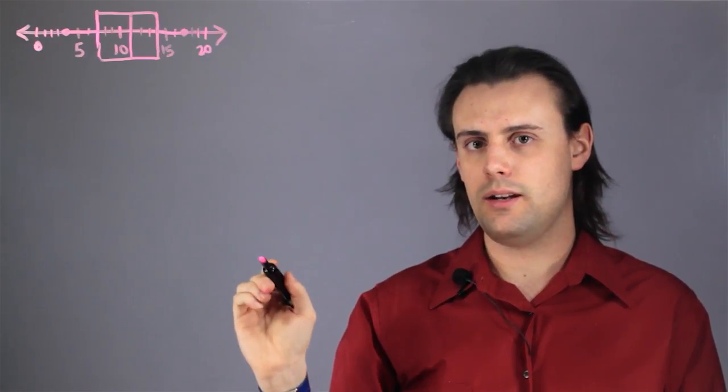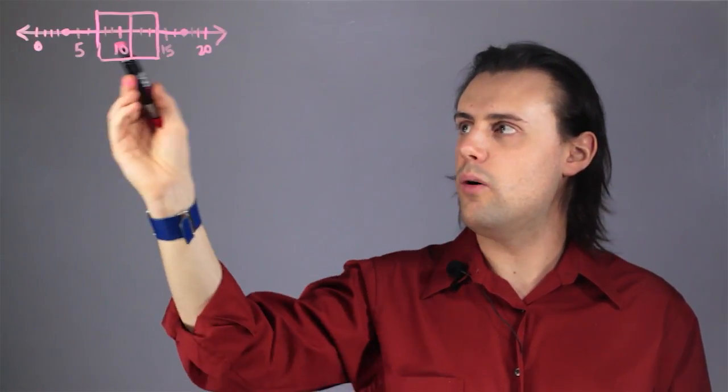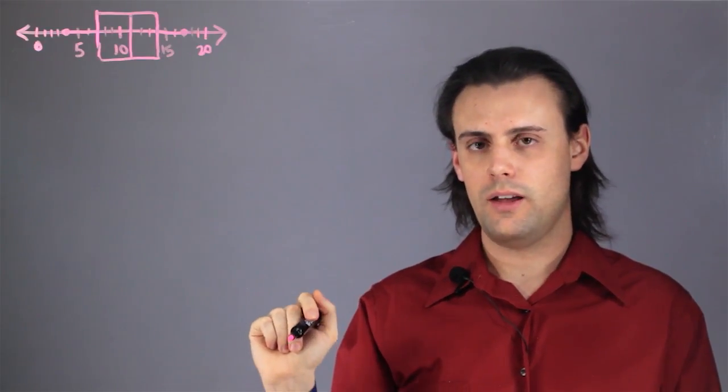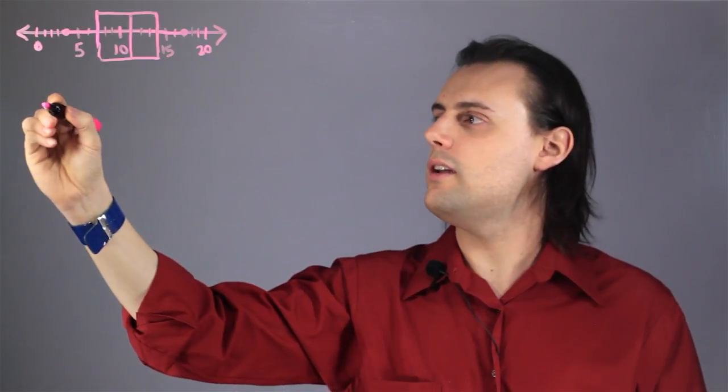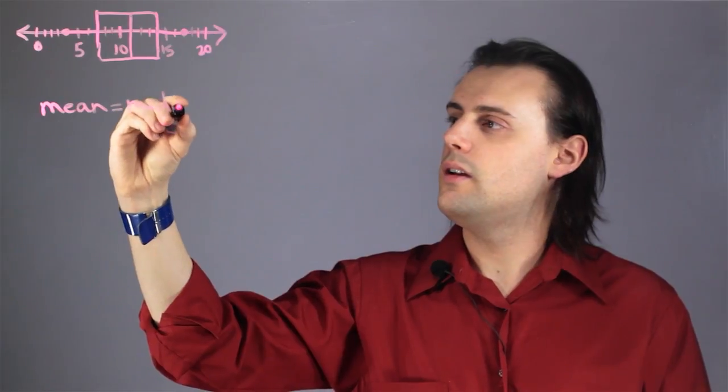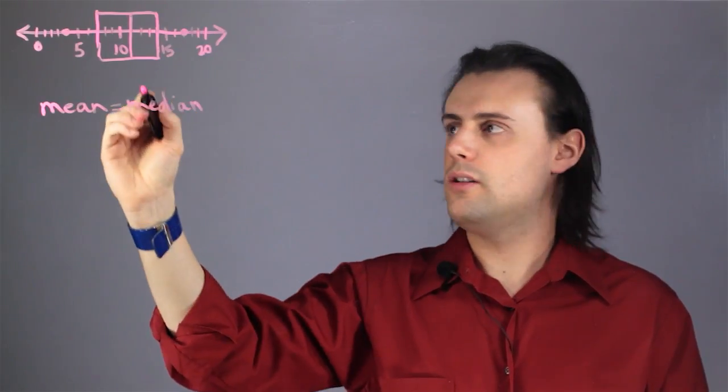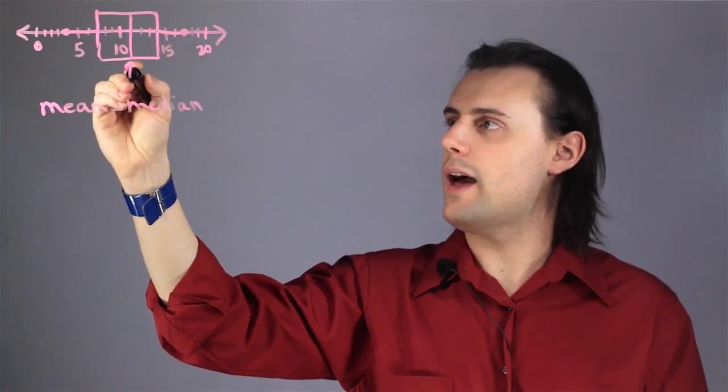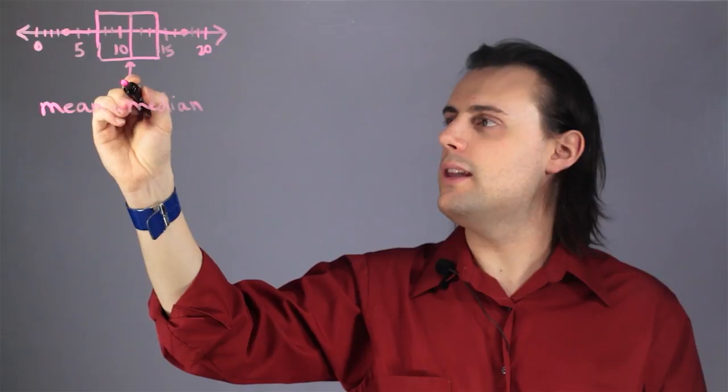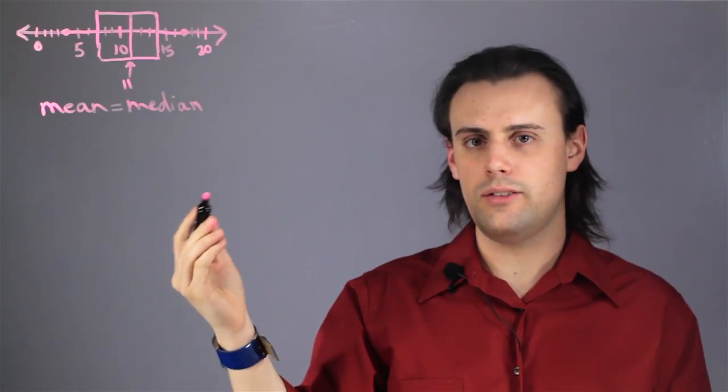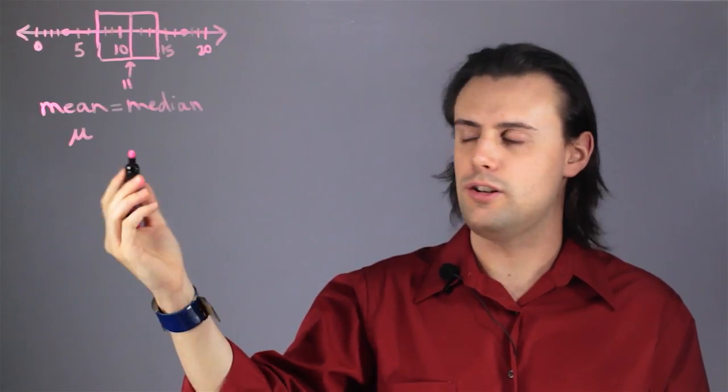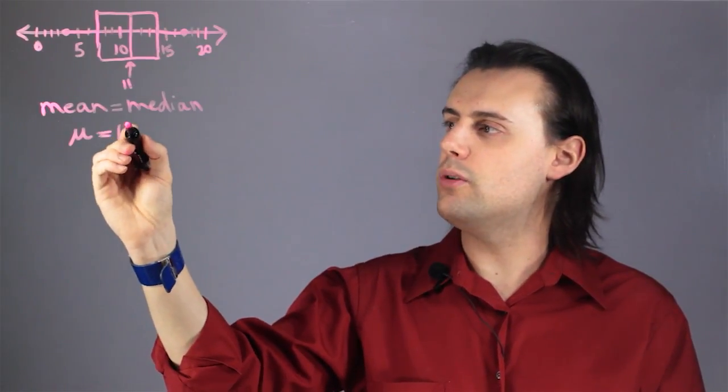I can only determine the mean if I know that all the numbers in my data set follow a normal or Gaussian distribution. If that's the case then the mean is simply equal to the median which in this case would correspond to the number overlapped by this line in the middle of my box which happens to be 11. So if that's the case then my mean which I'm going to use Greek letter mu to denote the average or mean would be equal to 11.